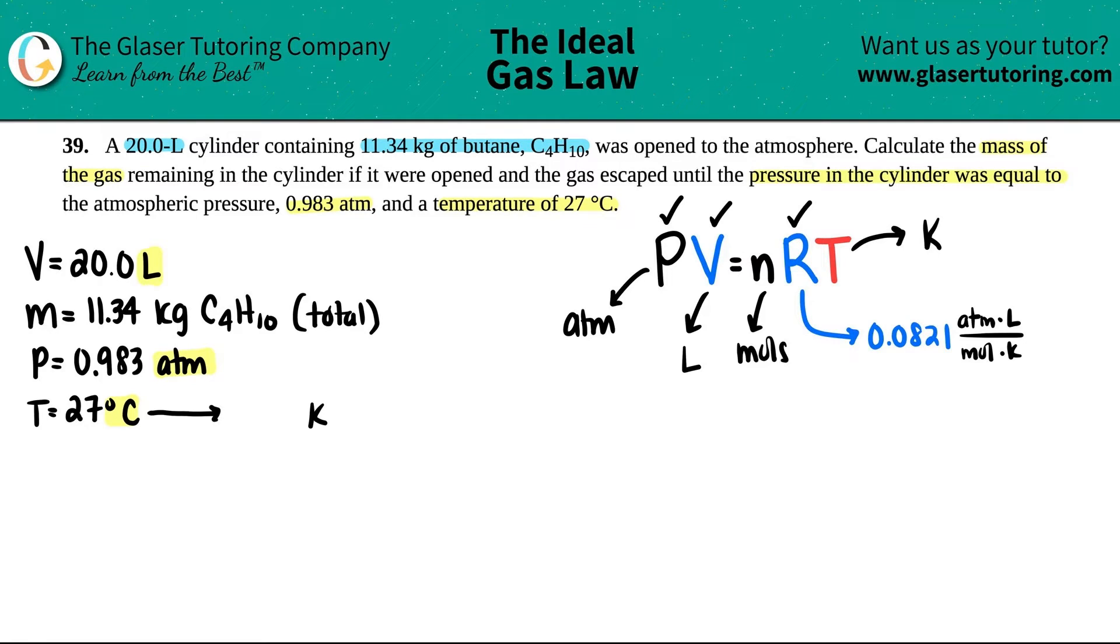How do we go from Celsius to kelvin? We could just add 273. You could add 273.15, but I think this will do. 27 plus 273, I get 300 kelvin. Okay.